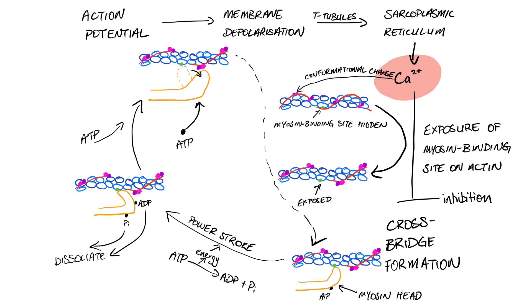As part of the contraction process, contraction is through the cross bridge cycle whereby we get myosin binding onto actin and basically just forming more and more cross bridges over and over again until we shorten the sarcomere, that functional unit.